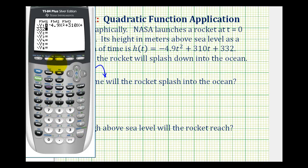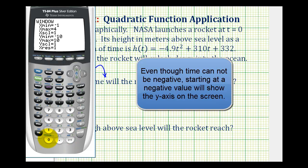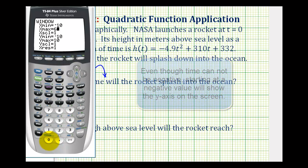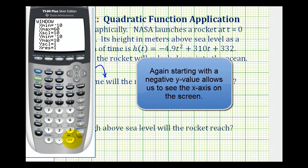Now let's adjust the window by pressing the window key. Remember, x represents the time and y represents the height of the rocket. So let's start the time at negative 10. Let's go out to 60 seconds, which would be one minute. We'll change the x scale to 10. That means there'll be a tick mark every 10 units. Then for the y values, we know the y intercept is 332. So we're going to have a pretty large y maximum. Let's start with a y minimum of negative 500.